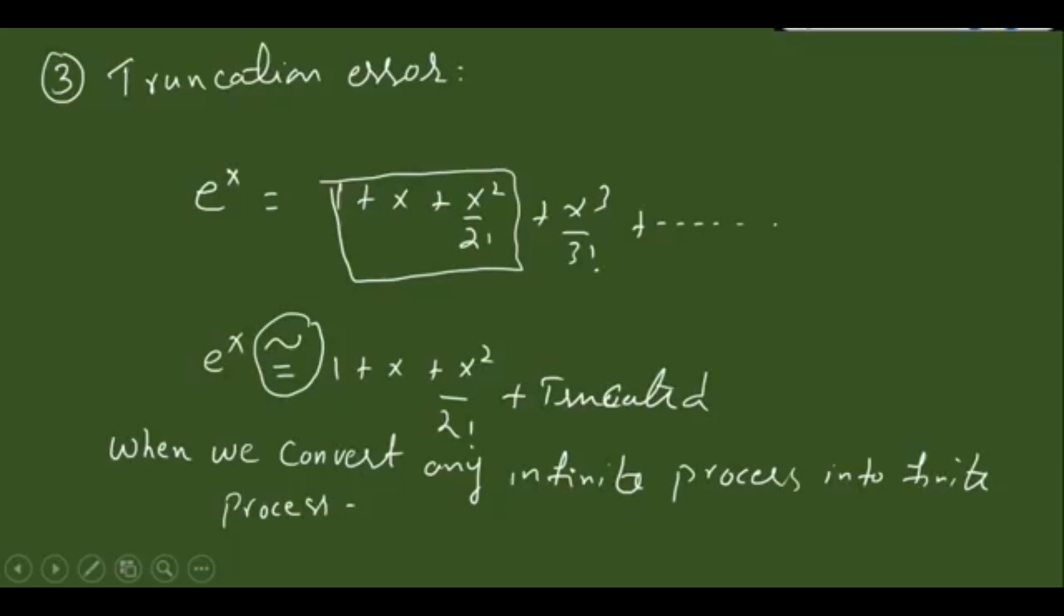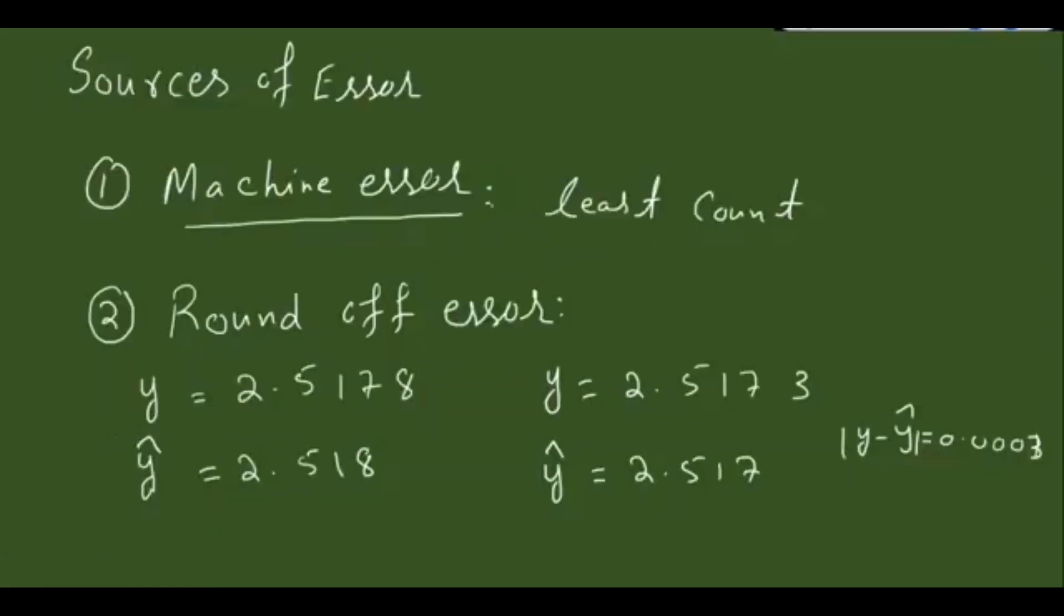What we do is convert this infinite process into a finite—only three terms, four terms, five terms. Whenever we do this, we basically introduce error in the calculation. Now onward, in place of e^x, if I use this truncated term, I am containing error in my calculation. This is one of the common sources of error in mathematics—truncation. These are some sources: machine error, instrumental error, precision, and these kinds.